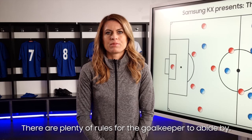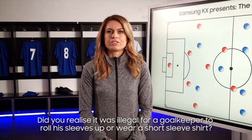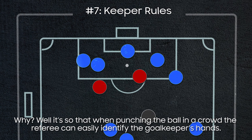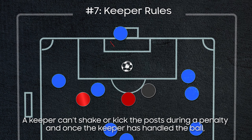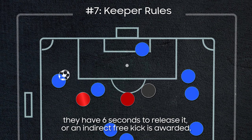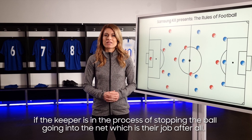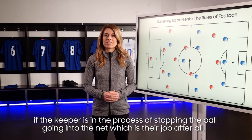There are plenty of rules for the goalkeeper to abide by. Did you realize it was illegal for a goalkeeper to roll up his sleeves or wear a short sleeve shirt? Well, it's so that when punching the ball in the crowd, the referee can easily identify the goalkeeper's hands — however, it's a rule that has been recently relaxed. A keeper can't shake or kick the post during a penalty, and once the keeper has handled the ball, they have six seconds to release it or an indirect free kick is awarded. The only time the rule doesn't apply is if the keeper is in the process of stopping the ball going into the net, which is their job after all.